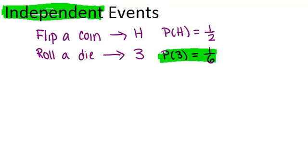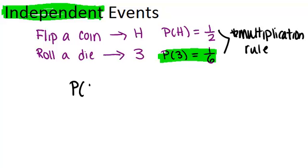When two events are independent, something cool happens: you can use what's called the multiplication rule if you want to figure out the probability of both events happening. Say in this game you had to get both heads and a three in order to win, and you want to figure out what's the probability that I'll win this game. So what you're trying to do there is figure out what's the probability of getting heads and rolling a three.